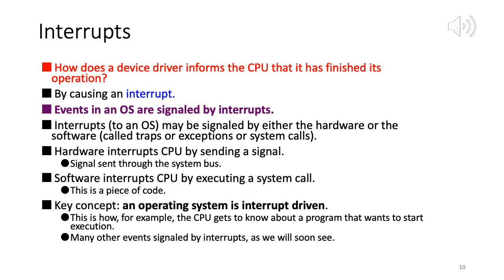An operating system is interrupt-driven. This is how the CPU gets to know about a program that wants to start execution. The CPU might already be juggling four or five programs, and when a sixth program wants to run, the CPU gets an interrupt signaling it to schedule that program as well. Many other events besides this are signaled by interrupts.